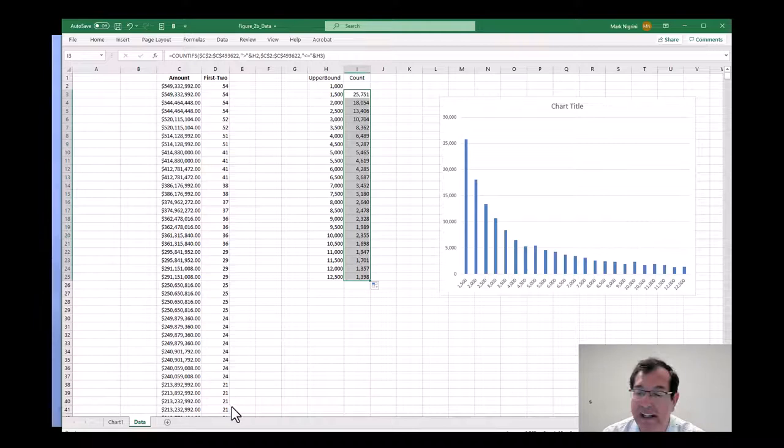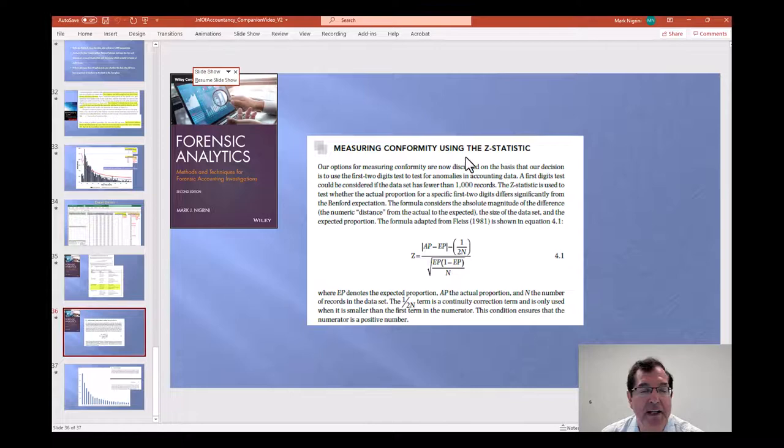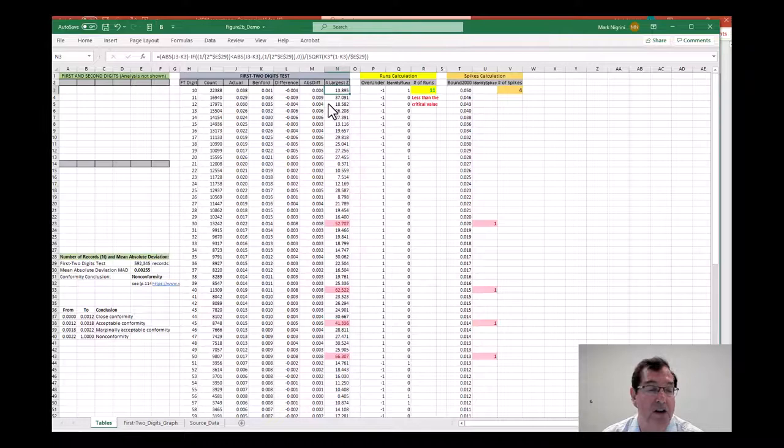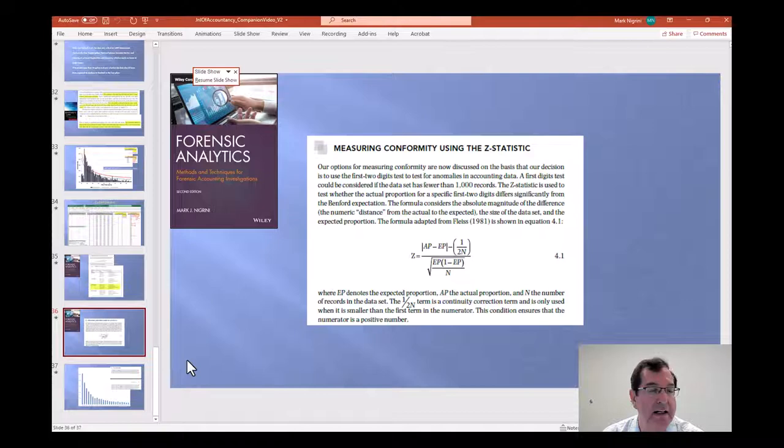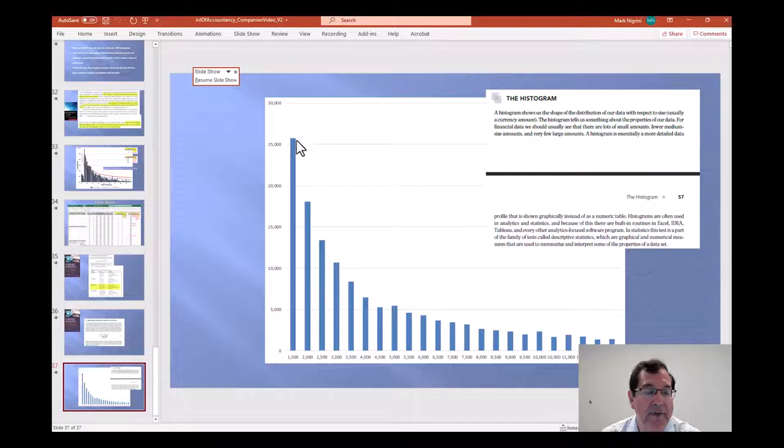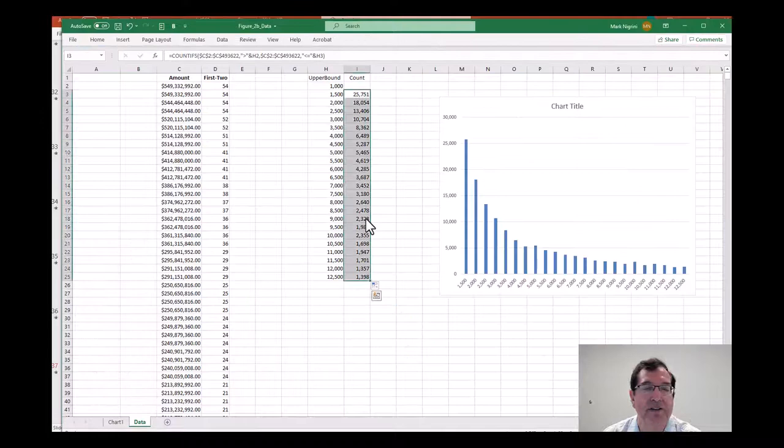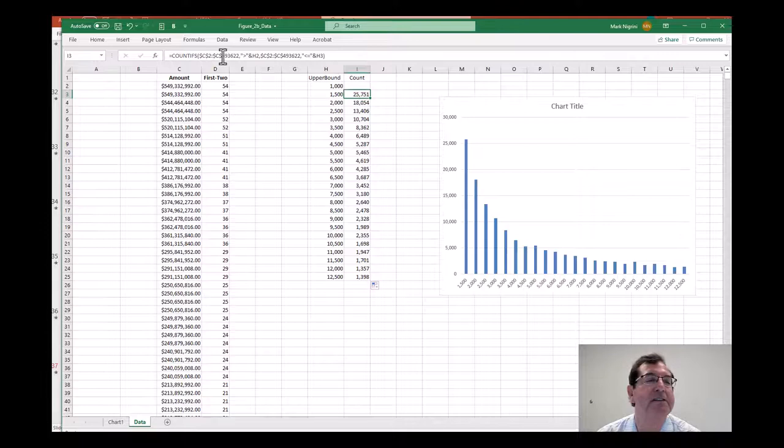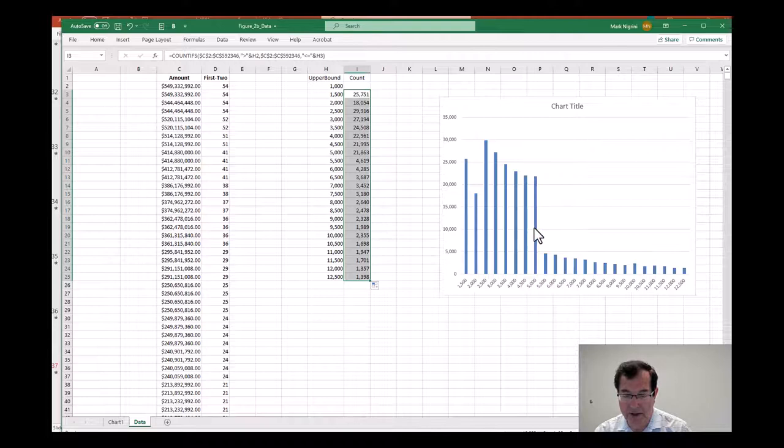The mean absolute deviation. Everything you wanted to know about the Z statistic used over here to get the four largest. Everything you wanted to know about a histogram is here, and that histogram should have been smooth like that. Instead, it turned out to be showing the huge excess in this range, and this was exactly the journal entry testing threshold, and the numbers coming in just below that.